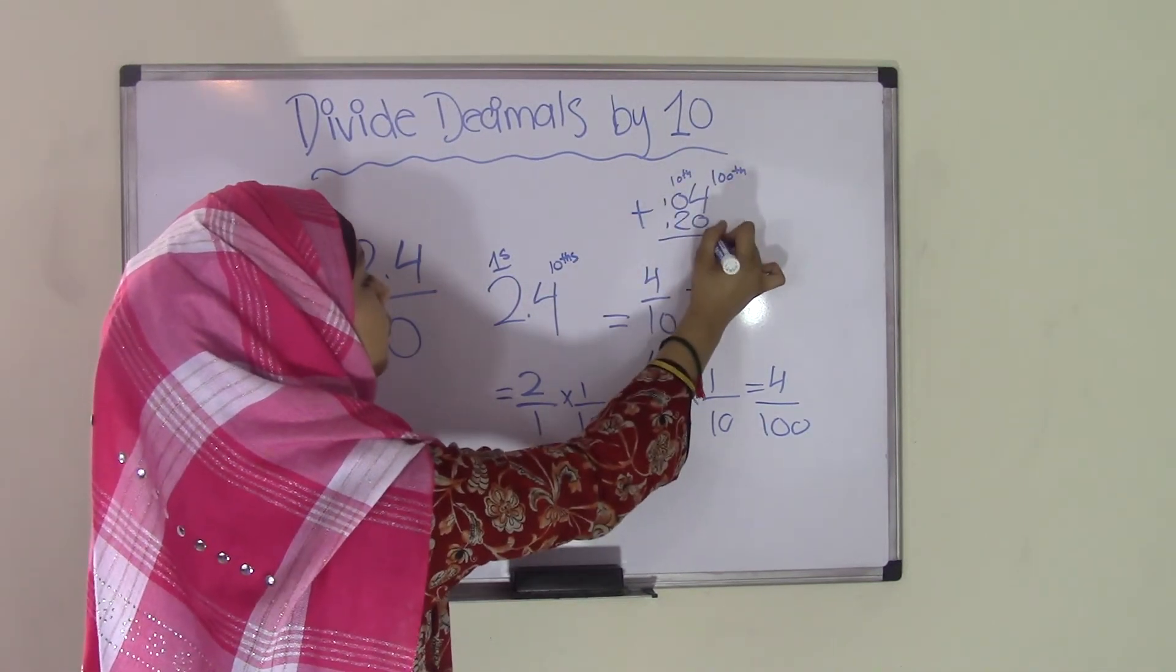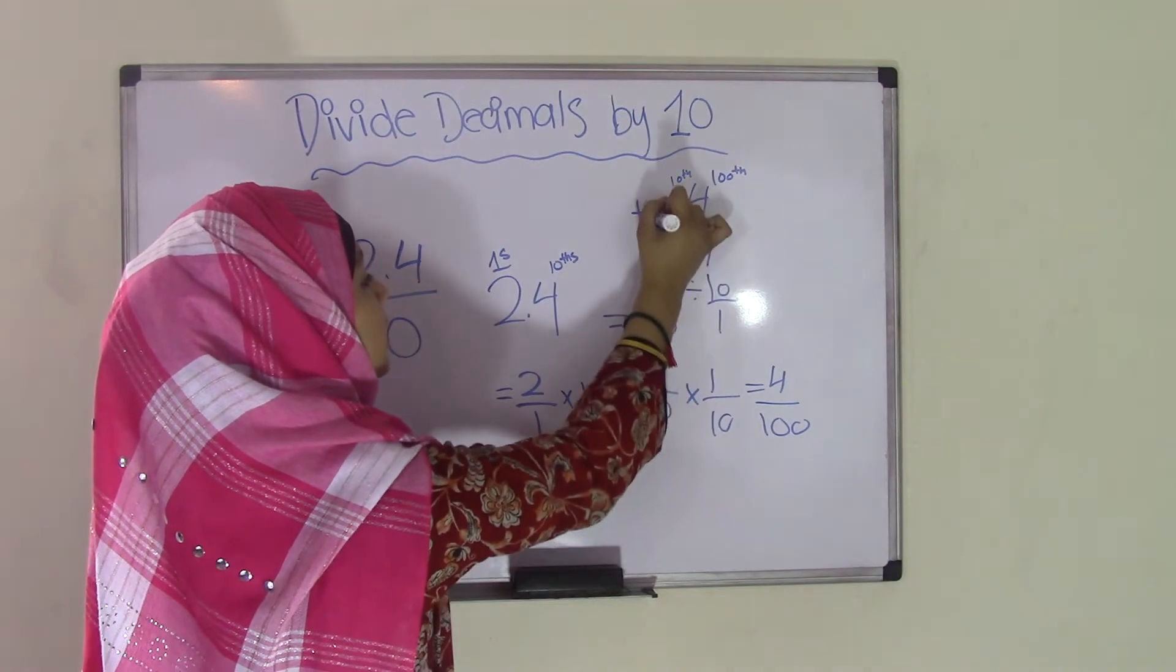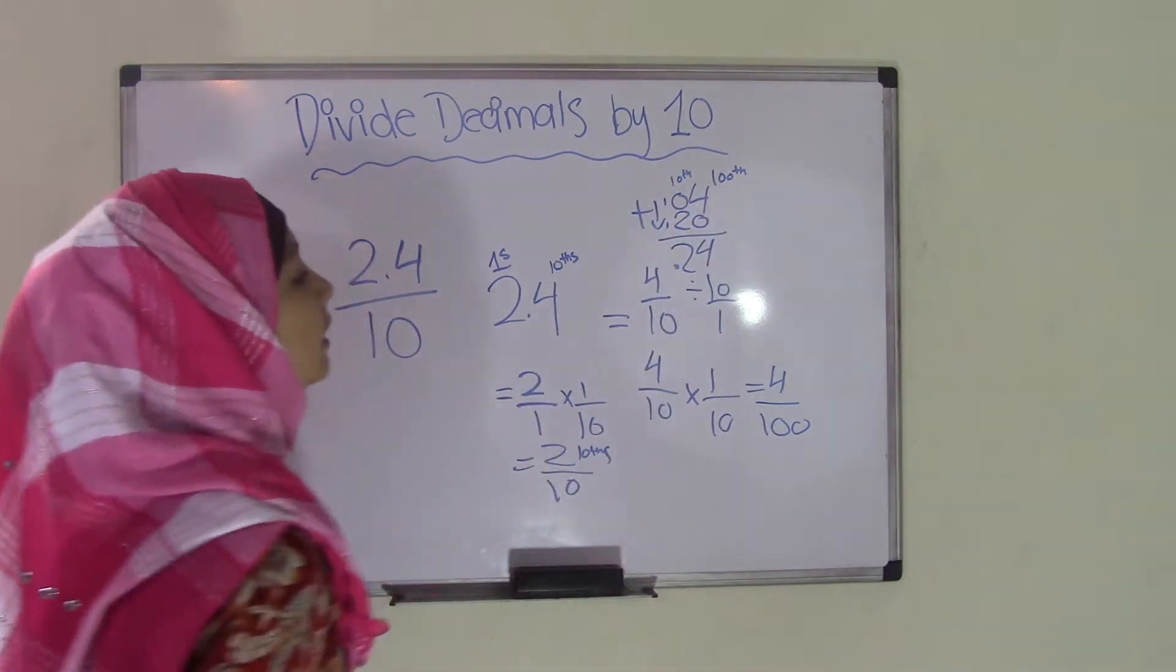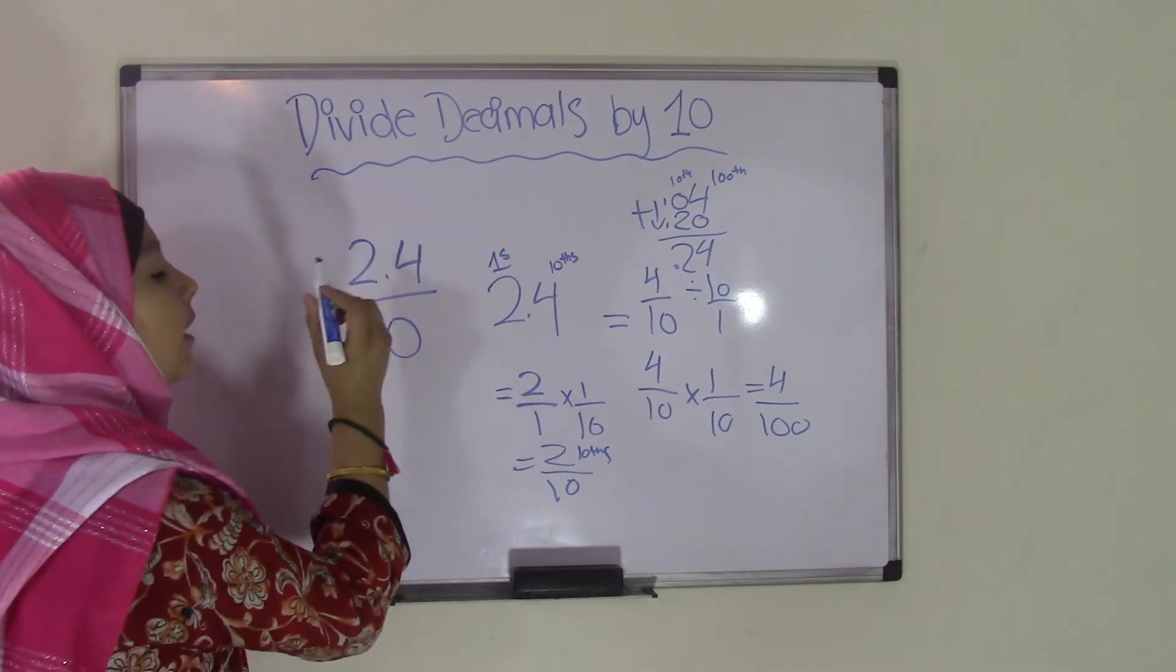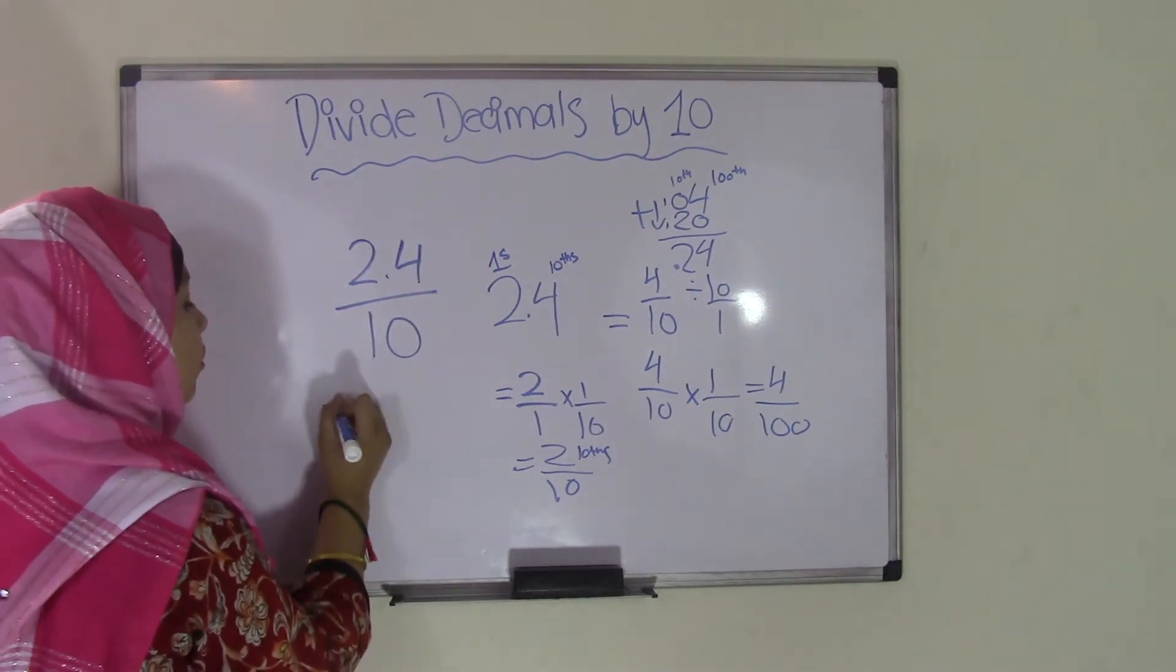Add them together, 4 plus 0 is 4, 0 plus 2 is 2, bring down the decimal point. That means we get our quotient of 0.24. That means the quotient of 2.4 divided by 10 equals 0.24.